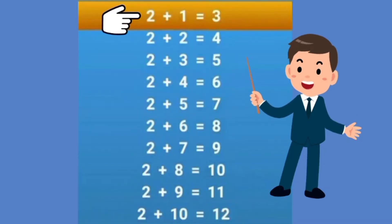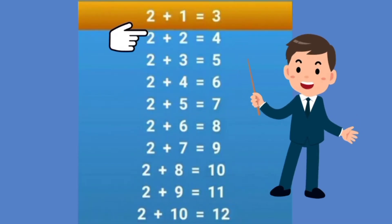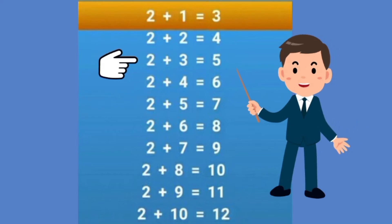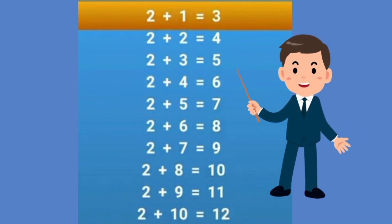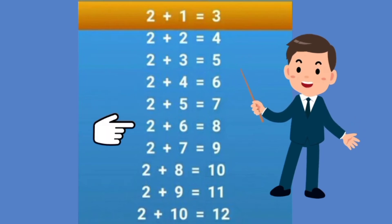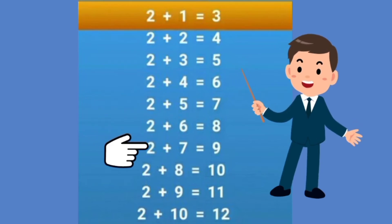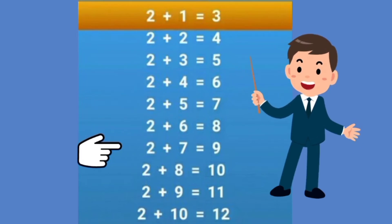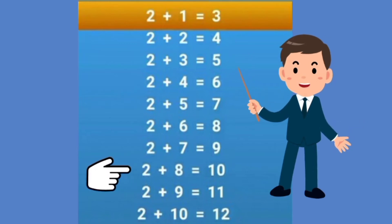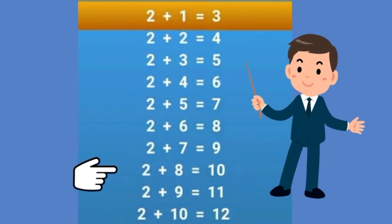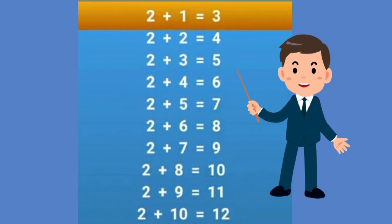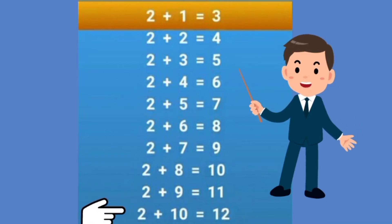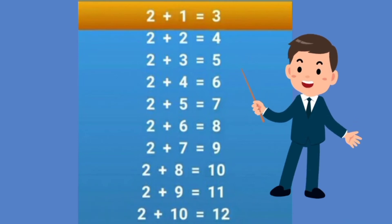2 plus 1 is equal to 3. 2 plus 2 is equal to 4. 2 plus 3 is equal to 5. 2 plus 4 is equal to 6. 2 plus 5 is equal to 7. 2 plus 6 is equal to 8. 2 plus 7 is equal to 9. 2 plus 8 is equal to 10. 2 plus 9 is equal to 11. 2 plus 10 is equal to 12.